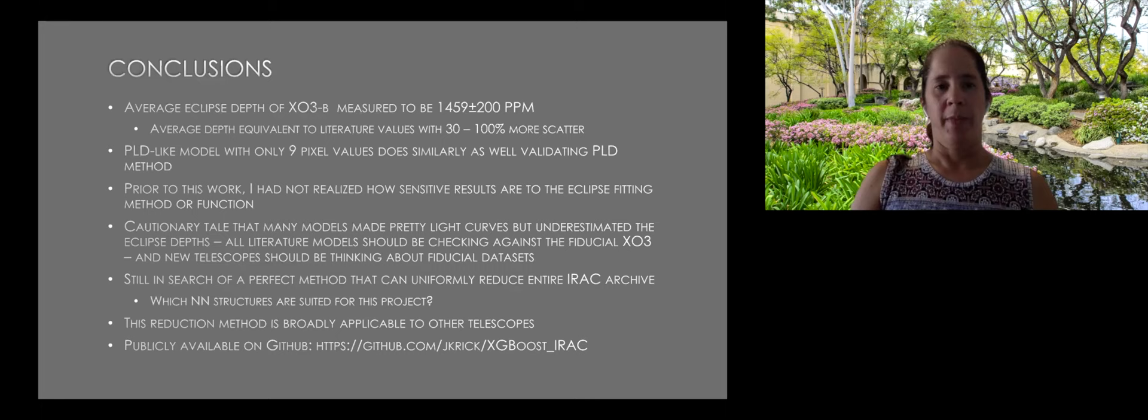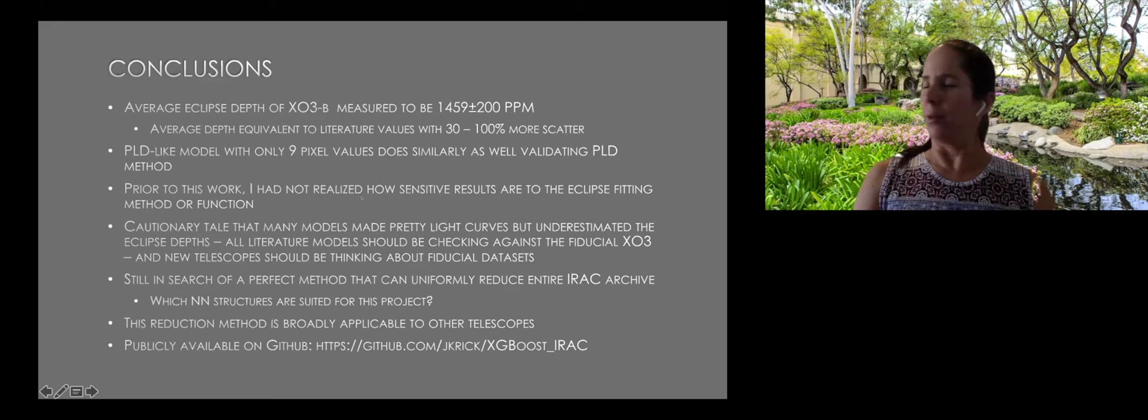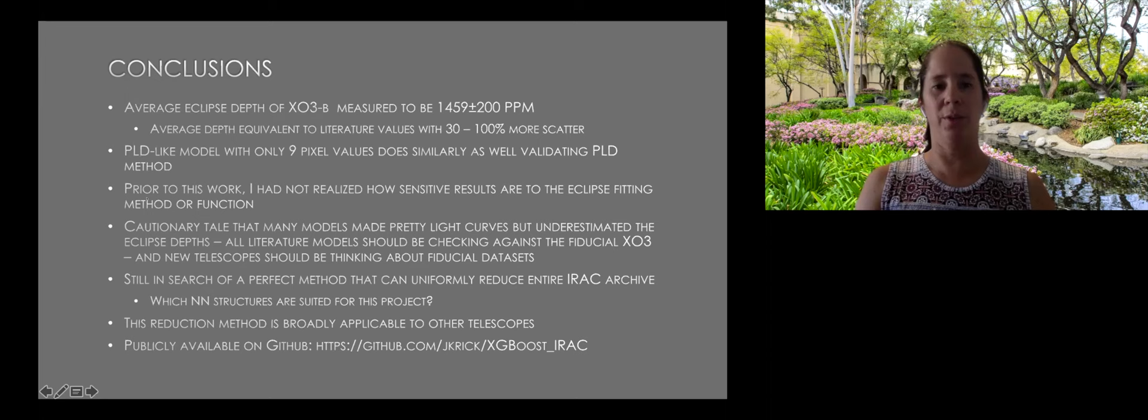And in conclusion, the average eclipse depth is the equivalent to literature values, but with more scatter. This is the PLD is something very specific to this work. None of this work gets done in a vacuum. And so not only are the results sensitive to which models I use, but also to the eclipse fitting method or the function that you use to fit. This is a cautionary tale that many models, when I started this with a decision tree, I got these beautiful light curves that looked like all the systematic was gone. And that's what encouraged me to keep going on this project, but it completely underestimated the eclipse depth. So that was also, the model was also removing astrophysical signal, which obviously is not a good idea.